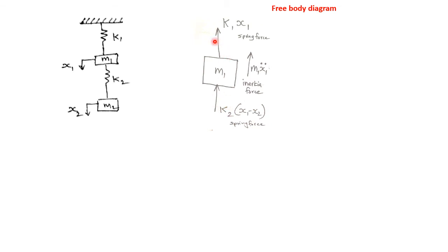Both spring forces act upward. When mass M1 is displaced downward, spring K1 pulls it upward, and spring K2 pushes it upward. We also represent the inertia force of mass M1. Since M1 is moving downward, the inertia force acts upward. Inertia force is mass times acceleration: M1·Ẍ1.